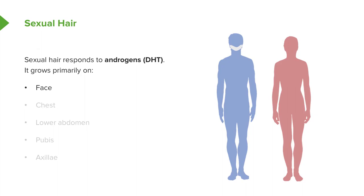Sometimes you can find chest hair in women, which is also abnormal, but you do see a male distribution on a man. You can have it on the lower abdomen, which is sometimes abnormal in women. Pubic hair is also controlled by DHT, as well as hair in the axilla.